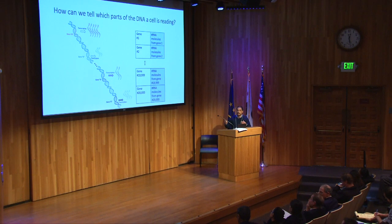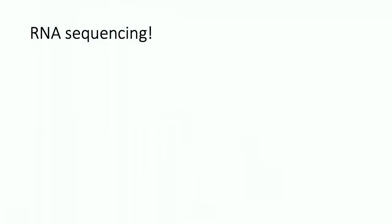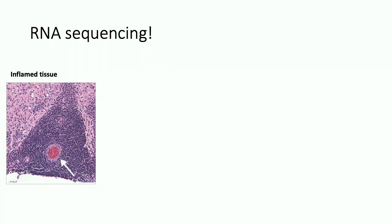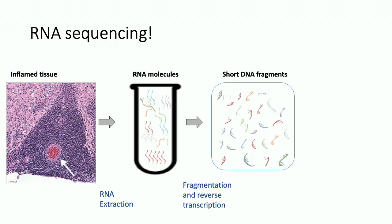The answer is RNA sequencing — a fairly new technology, about 10 years old, and very useful. Starting from a sample of interest, say an inflamed tissue, we extract the RNA using enzymatic reactions and put it in a test tube. The next step is to fragment those RNA pieces into small chunks of about 300 base pairs, and also perform reverse transcription — going from RNA back to DNA, essentially against the central dogma of molecular biology. What we then have are short DNA fragments, each a short sequence of A, C, T, and G, that came from the genes being expressed in that tissue.